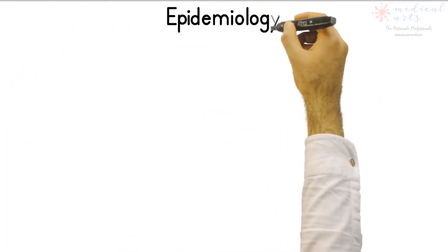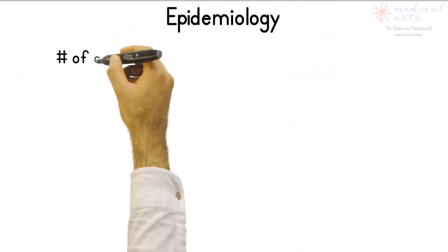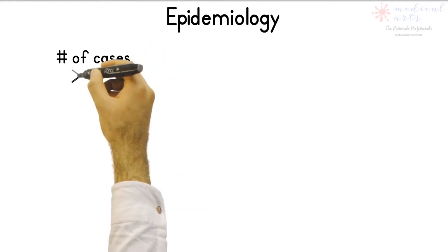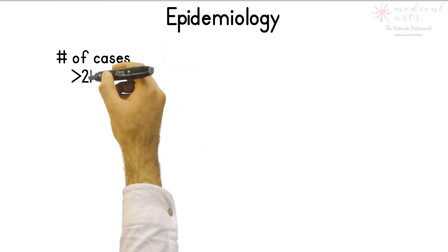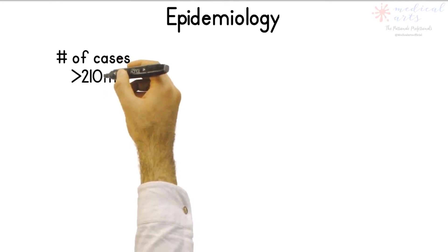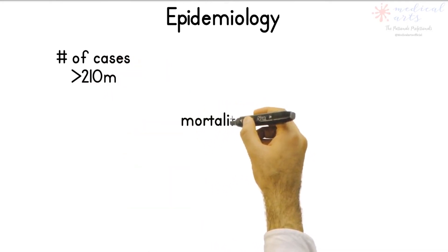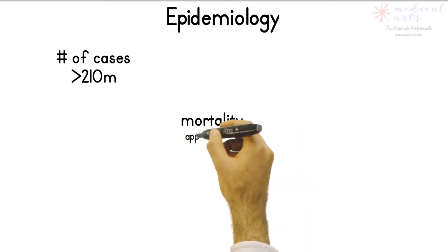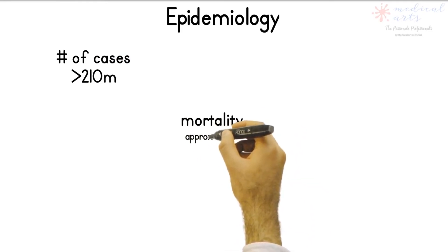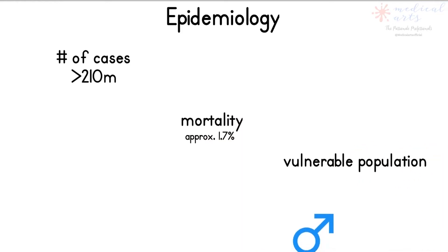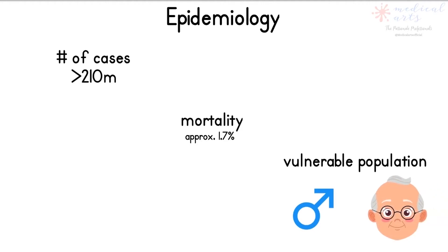As of August 21, 2021, confirmed COVID-19 infections are over 210 million individuals worldwide and have resulted in over 4.2 million deaths. Based on a Johns Hopkins University and Medicine report, the mortality rate from COVID-19 in the United States is 1.7%. COVID-19 death rates were highest among males, older adults, non-Hispanic American Indian, and Hispanic persons.